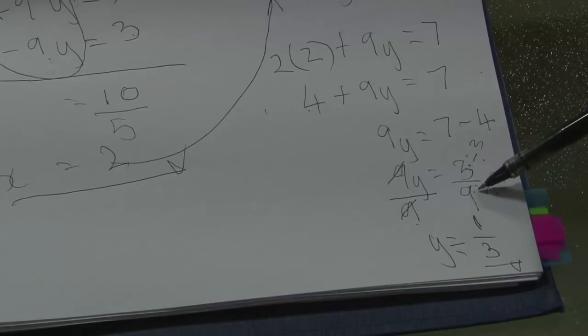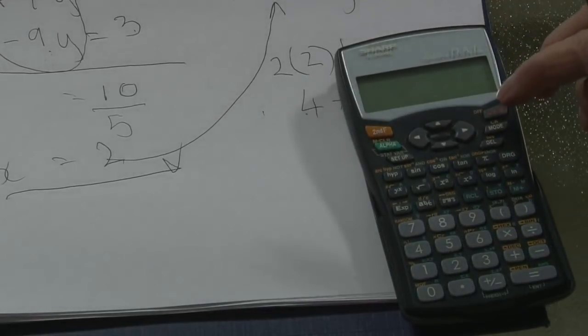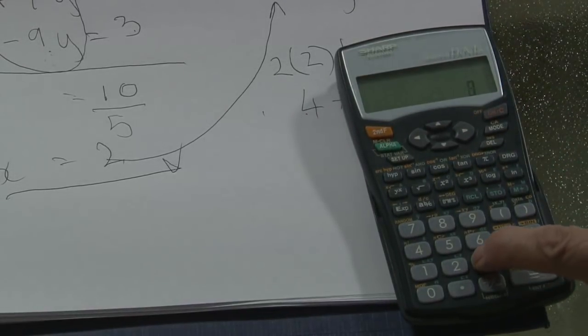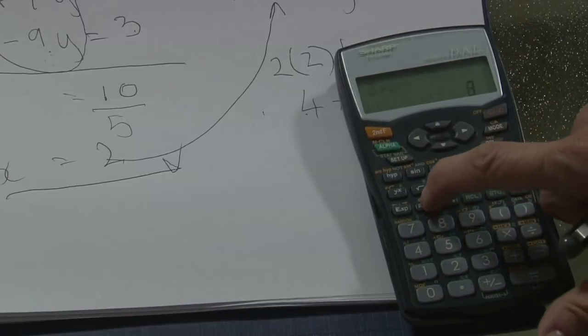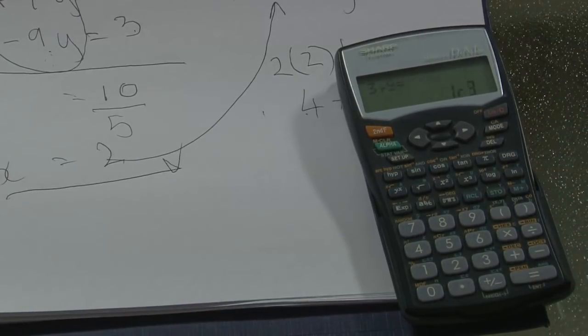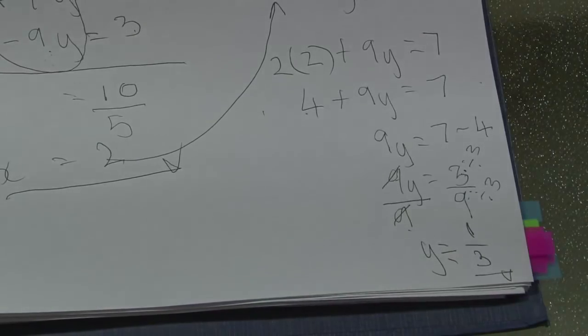When you have a fraction and you have to give the lowest terms, the easiest method is to use your calculator. If you enter 3 ABC 9, the calculator gives me 1 over 3. So this is just to make cancelling easier.